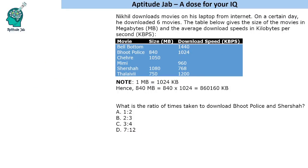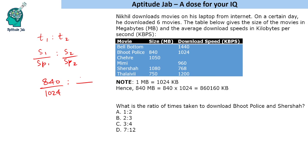The next question asks for the ratio of times taken to download Bhooth Police and Shersha. We use t1/t2 = (size1/speed1) ÷ (size2/speed2). For Bhooth Police: size = 840, speed = 1024. For Shersha: size = 1080, speed = 768. Simplifying gives 210 and 360, so the ratio is 21:36, which reduces to 7:12.